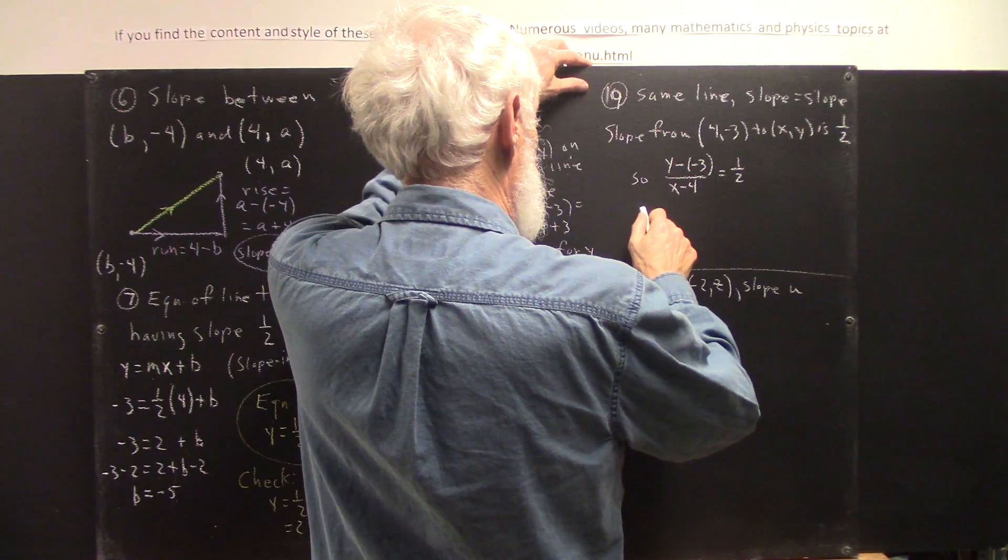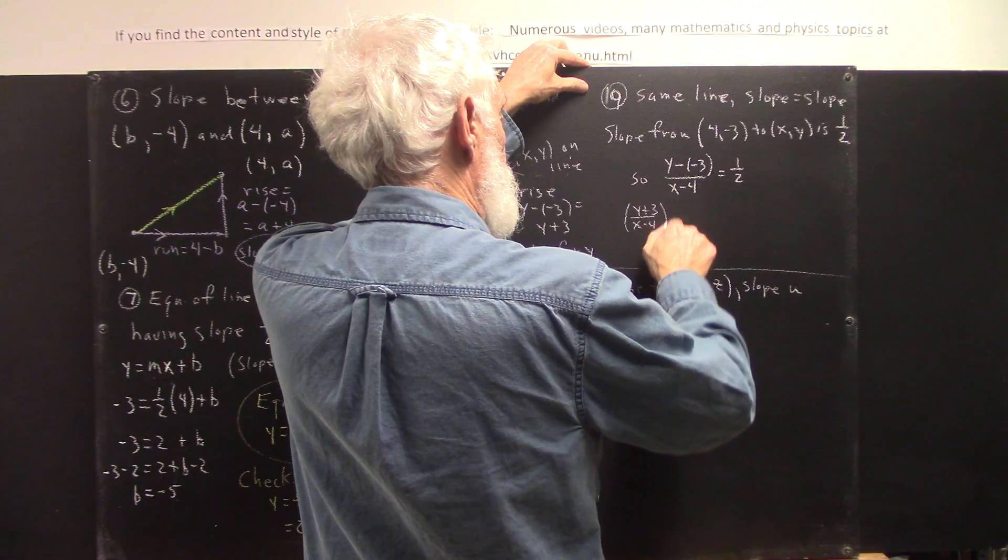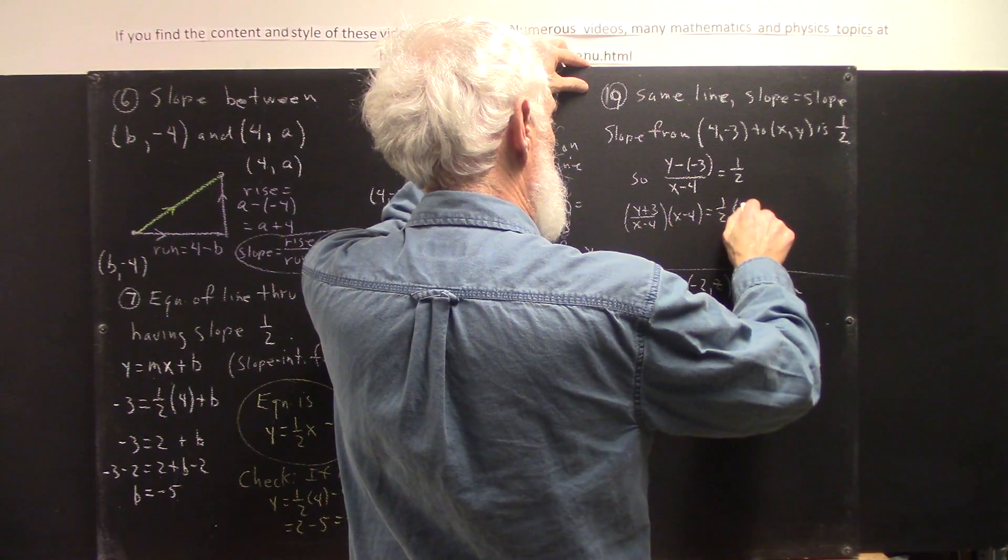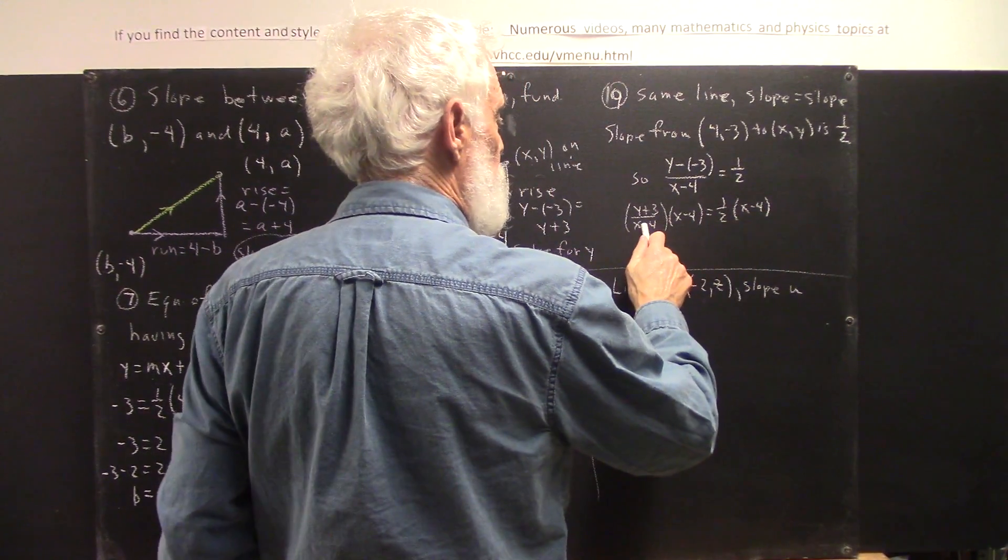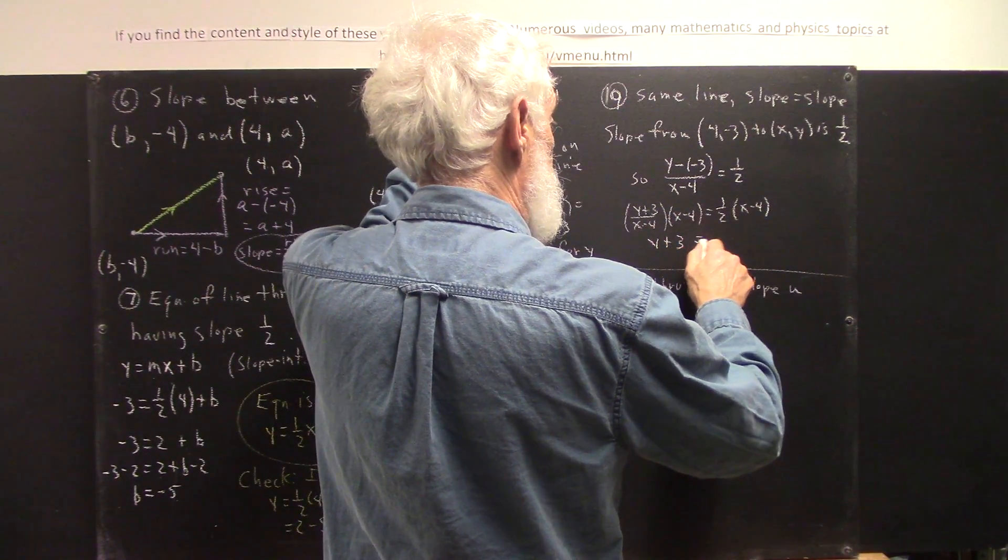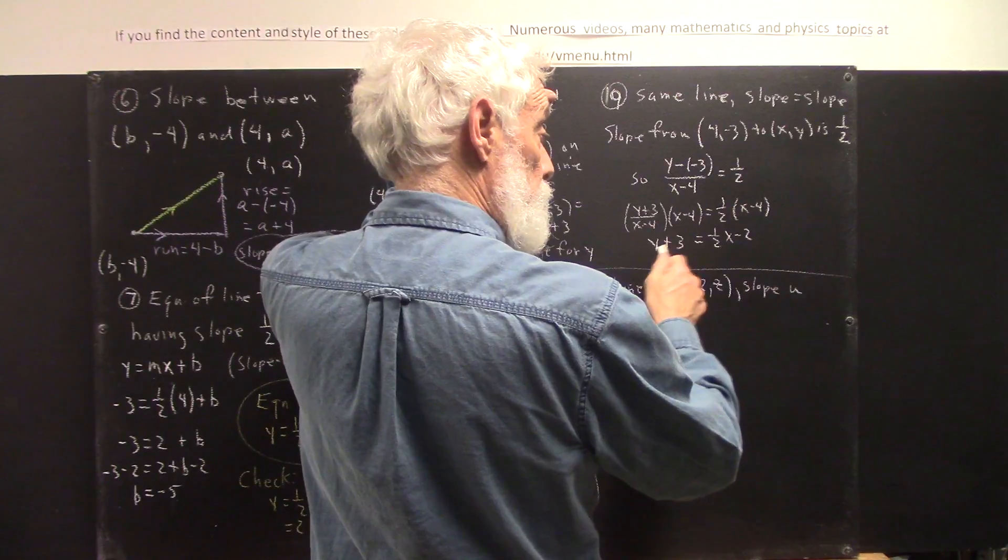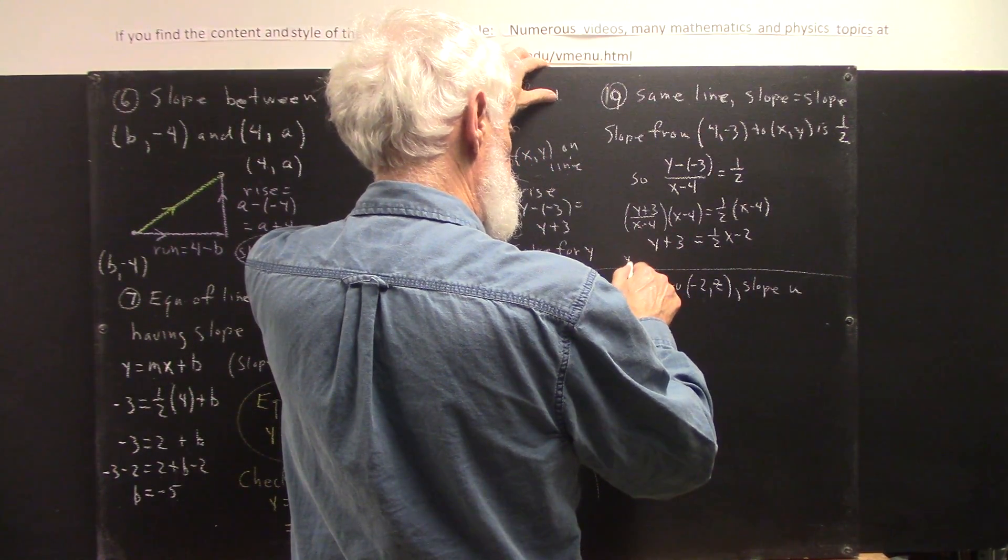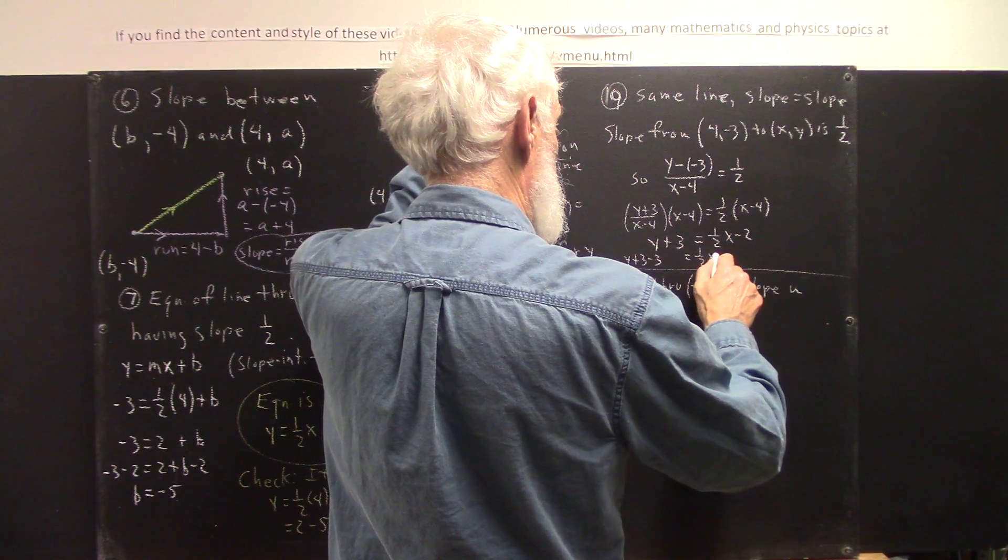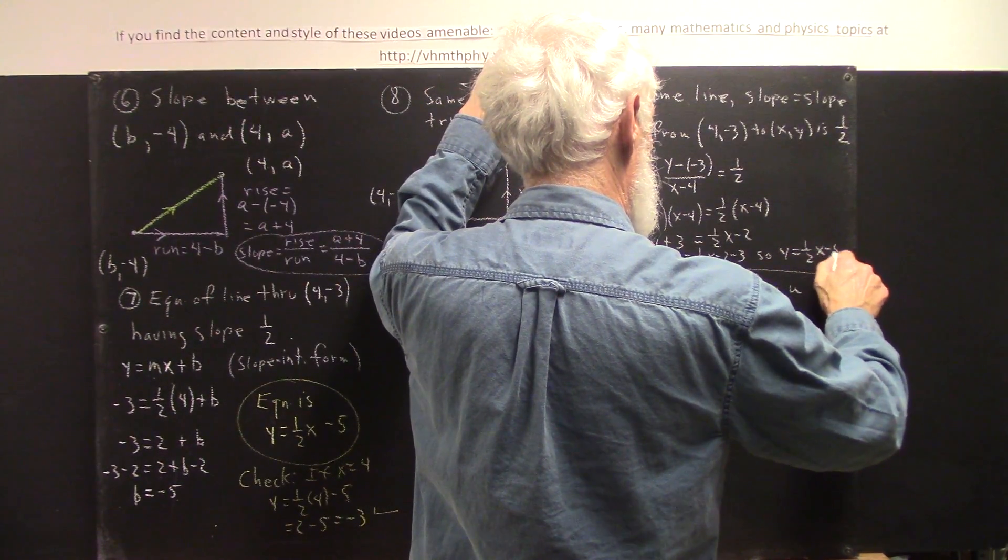y minus negative 3, of course, is y plus 3 over x minus 4. If we multiply that by x minus 4, and then multiply this side by x minus 4. This x minus 4 divides this x minus 4, leaving us y plus 3. 1 half distributes here, giving us 1 half x minus 2. And then subtract 3 from both sides. y plus 3 minus 3 equals 1 half x minus 2 minus 3. So, y equals 1 half x minus 5.